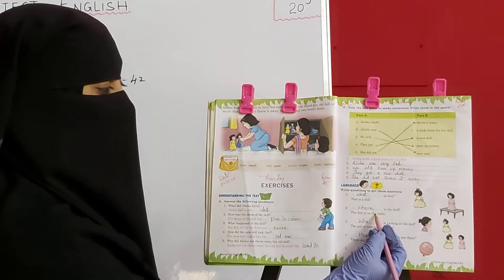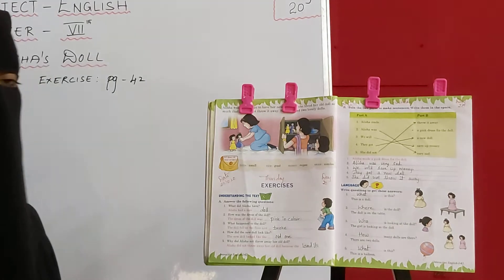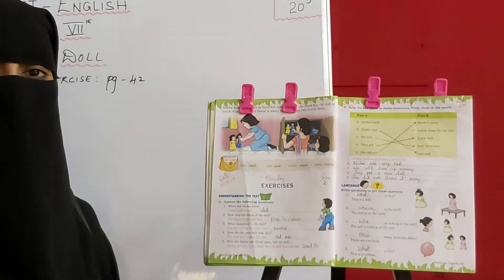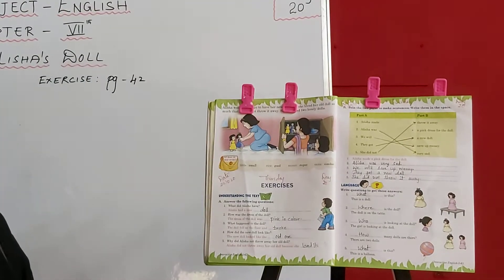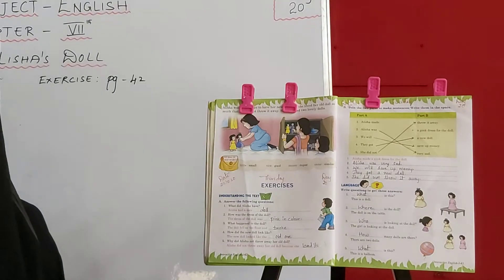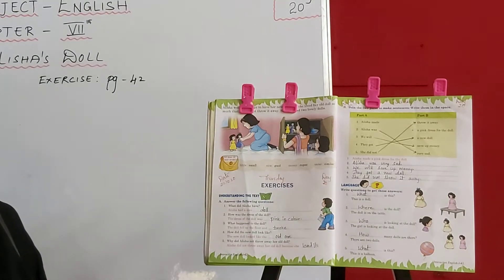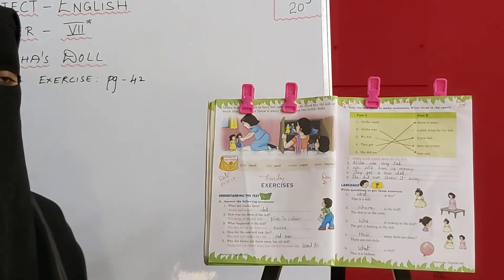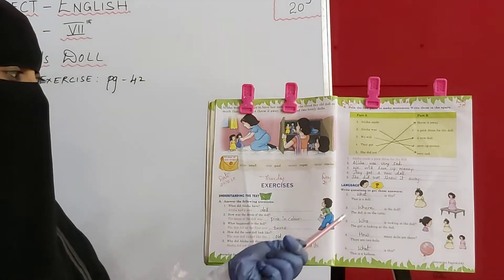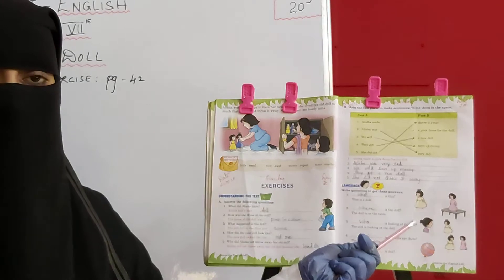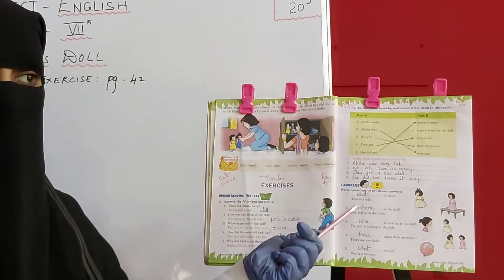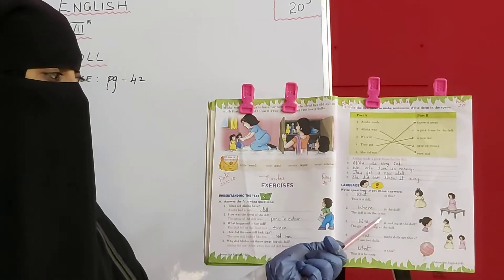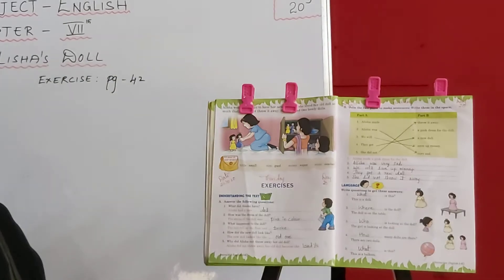Next one: The doll is on the table. Doll is on the table. Doll table ke upar hai. Toh iska question kya bolenge hum? Doll kahaan hai? Poochhenge. Doll kahaan hai? Toh answer aayega: Doll hai table ke upar. Toh English mein question kya banayenge? Where is the doll? The doll is on the table.